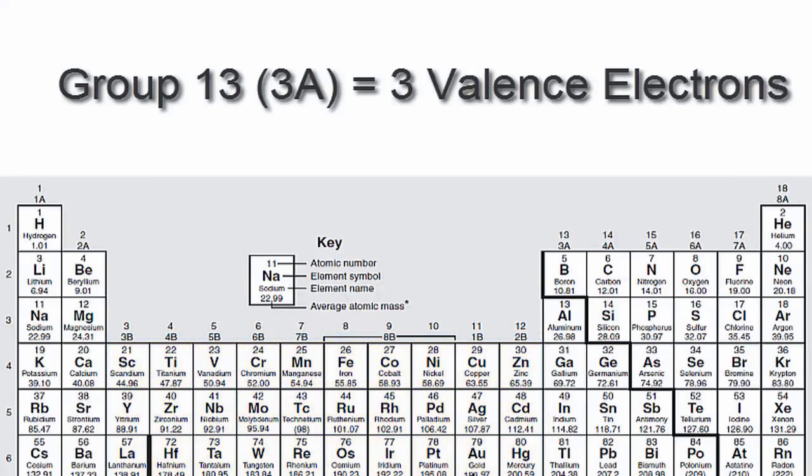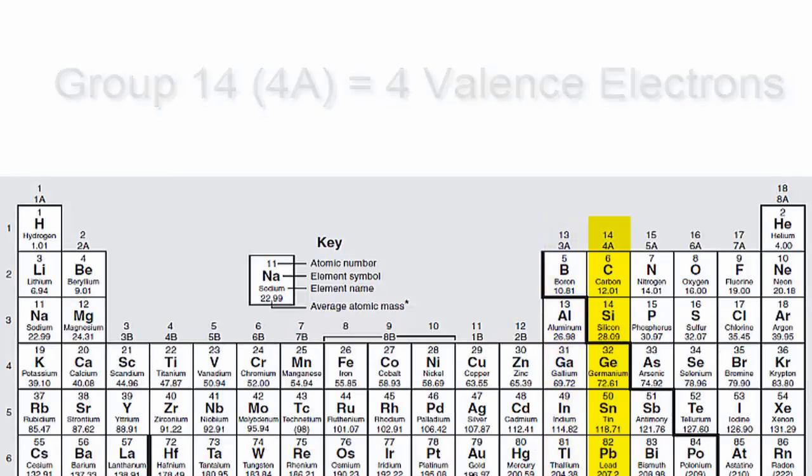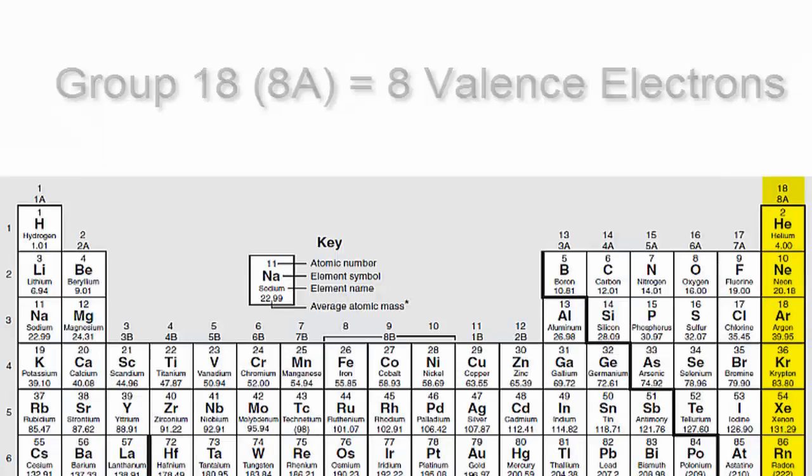We'll go to 13 or 3A, which have three valence electrons, then 14 or 4A, each of those elements in group 14 or 4A have four valence electrons, all the way up to group 18 or 8A, which have eight valence electrons.